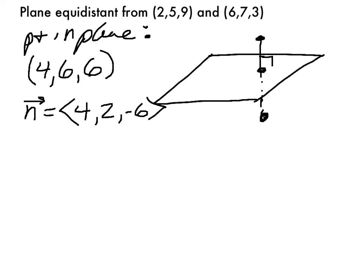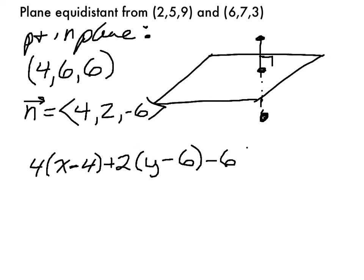Now I can write the equation of the plane: 4(x − 4) + 2(y − 6) − 6(z − 6) = 0. That's the equation of the plane that is equidistant from the two given points. I hope that's helpful as an example of how to write the equation of a plane in this specific case.